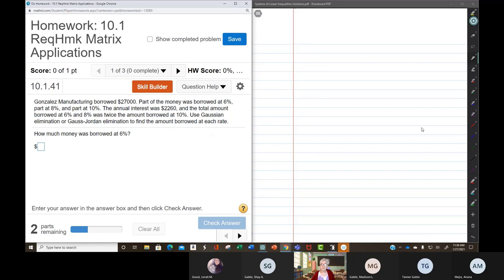That needs to be read a few times. Gonzales Manufacturing borrowed $27,000. Got that. Part of the money was borrowed at 6%, part at 8%, and part at 10%. We've got three groups of numbers, three groups of money.